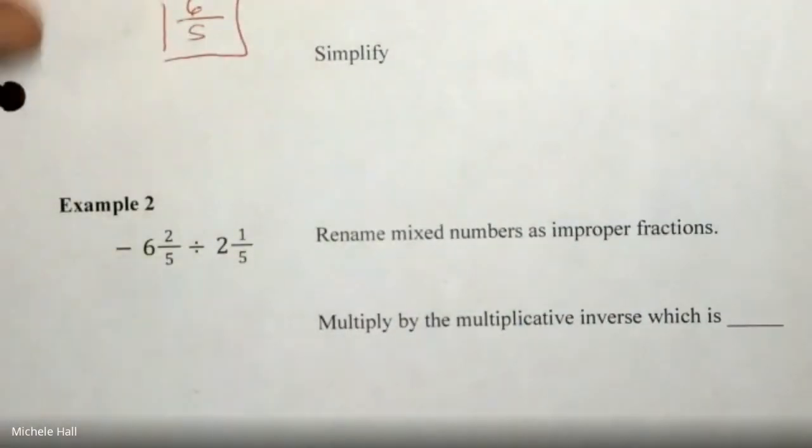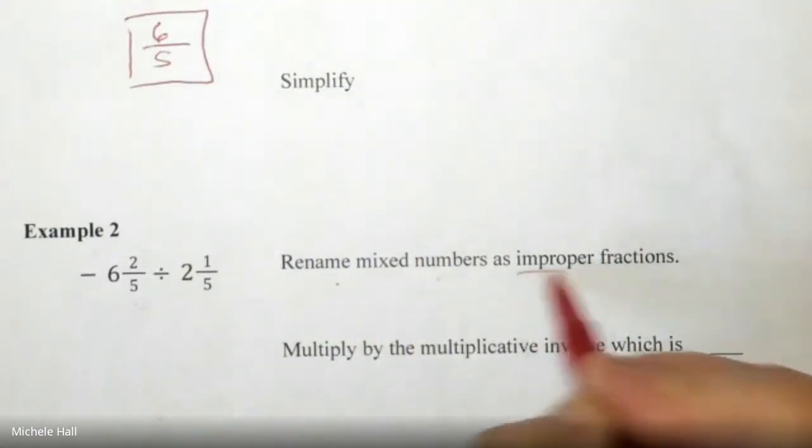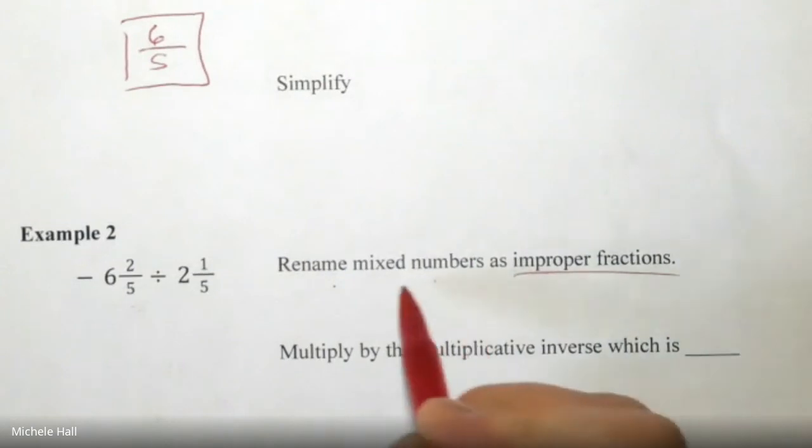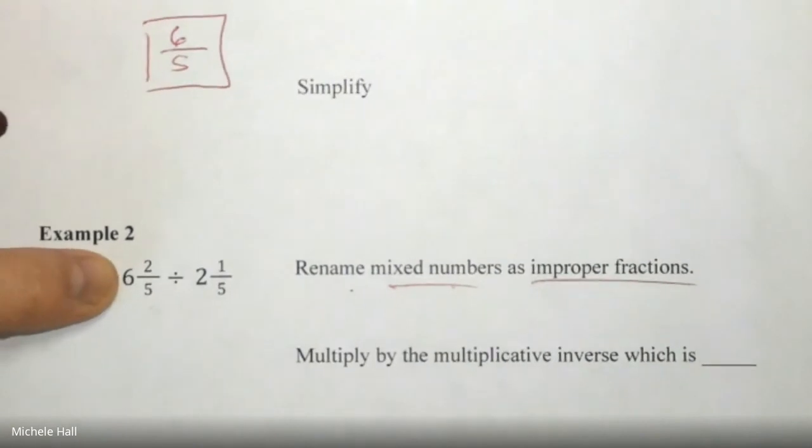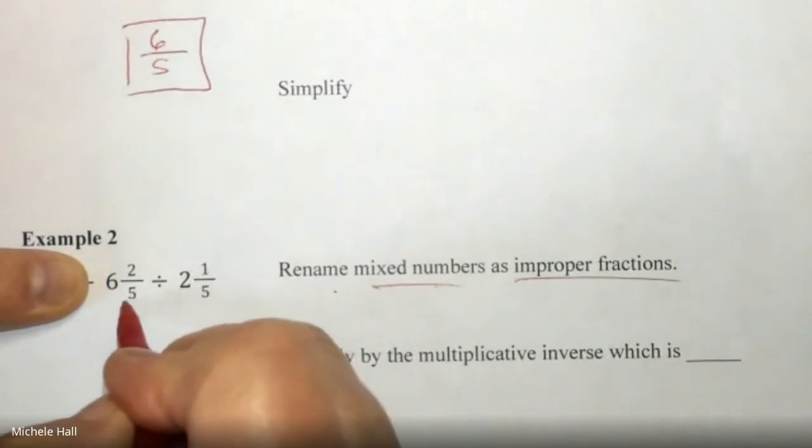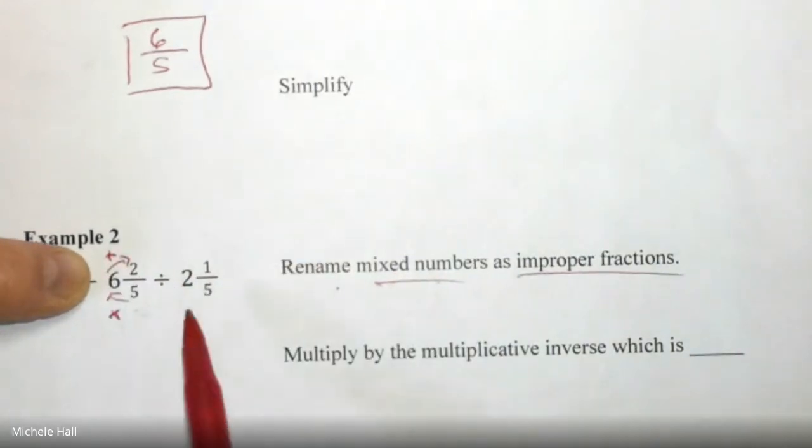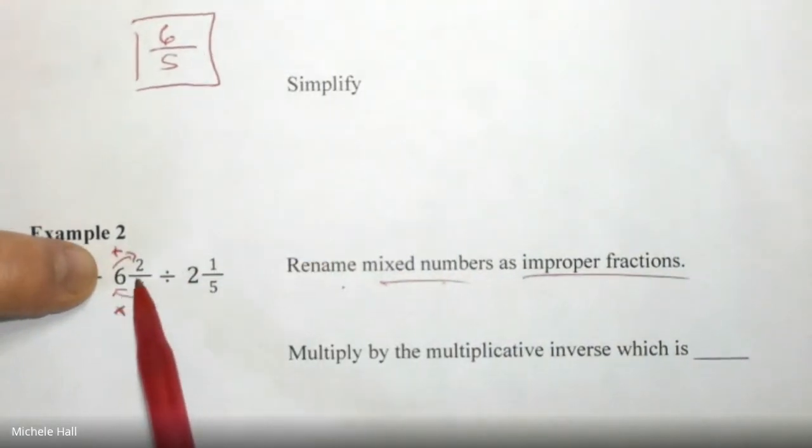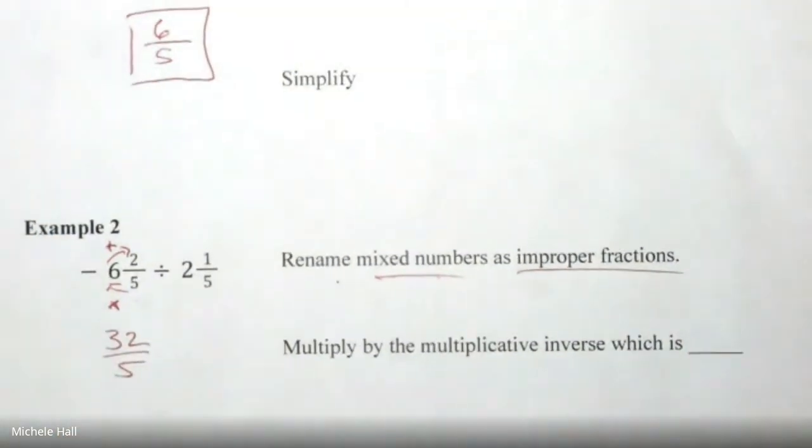One more: dividing mixed numbers. It says rename the mixed numbers as improper fractions - that's the first thing. Mixed numbers need to be changed to improper fractions. Remember, you're not taking the negative into consideration when you do that. It's five times six is thirty. So you're multiplying, multiply and then you're adding. So five times six is thirty plus two is thirty-two fifths. What do I do with the negative? Put it in the numerator.